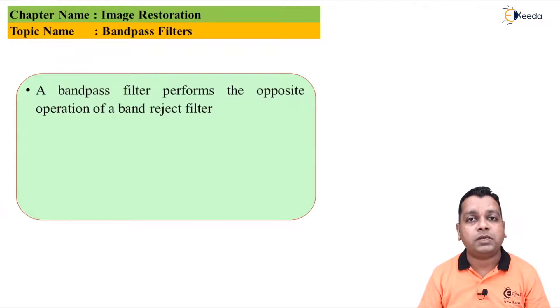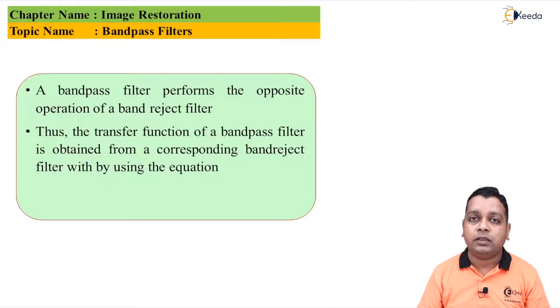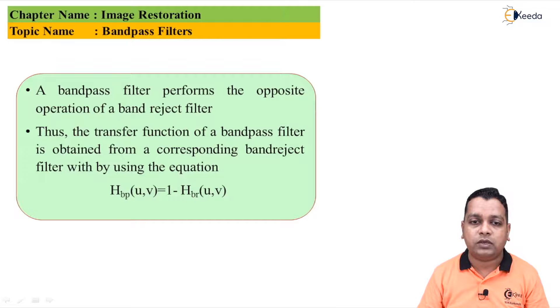For the band pass filter we have a complete opposite operation to that of the band reject filters. Therefore whatever the transfer function with respect to such type of the filtering can be, it has been obtained from the previous one by making a difference: we have the band pass filter HBP computed as one minus H suffix BR for the band reject filter for the two parameters in the frequency domain u comma v.